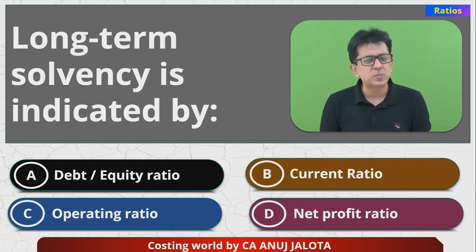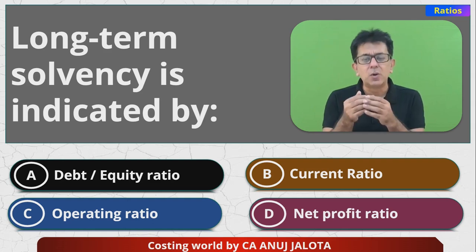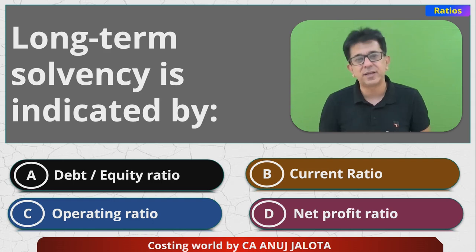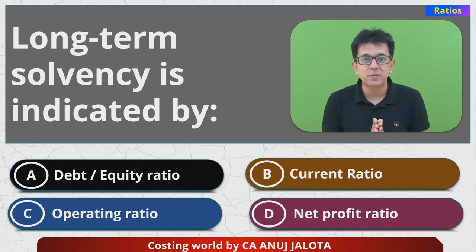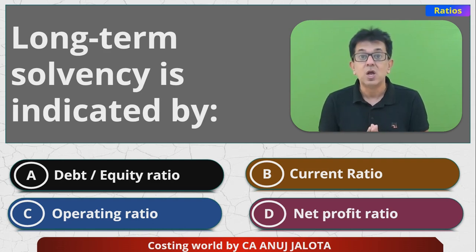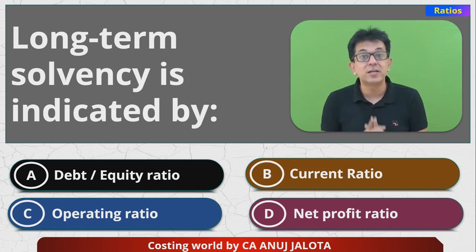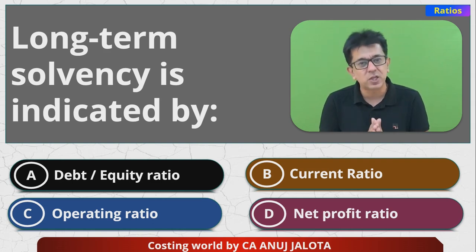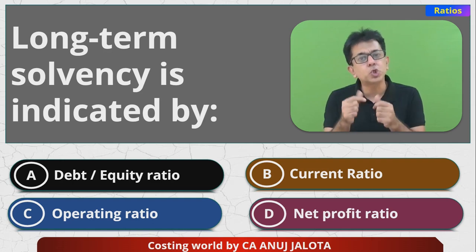C is operating ratio — that is basically your expenses ratio, nothing but operating expenses upon sales. This tells you how much portion of your sales is going toward operating expenses. So therefore, that's a profitability ratio and does not speak about solvency. Do remember: profits are always short-term in nature. That is why in FM, you have one big principle — look for wealth maximization, a long-term goal, not profit maximization, which is a short-term goal. C and D, the net profit ratio — net profit upon sales — both speak about profitability or short-term solvency.